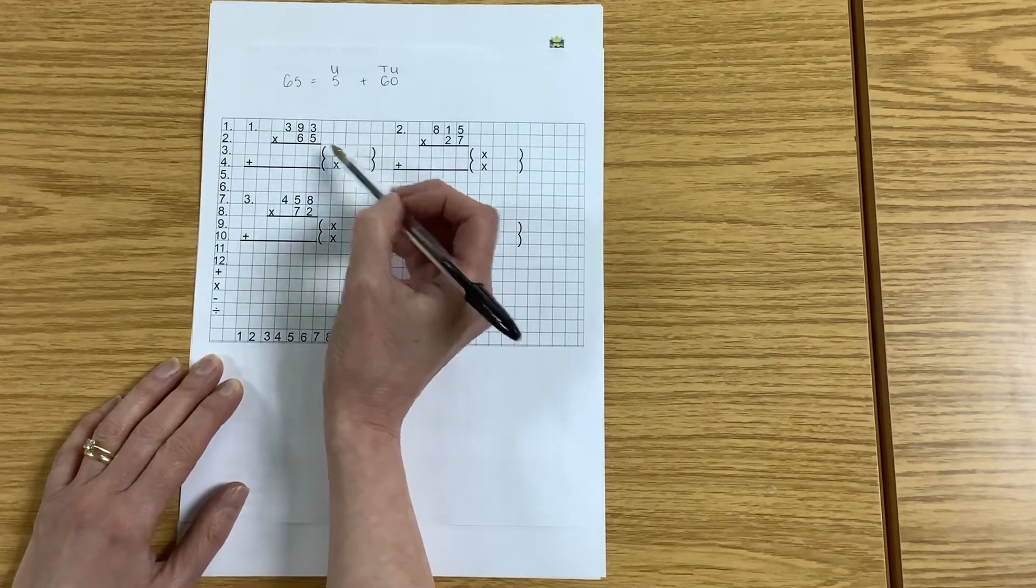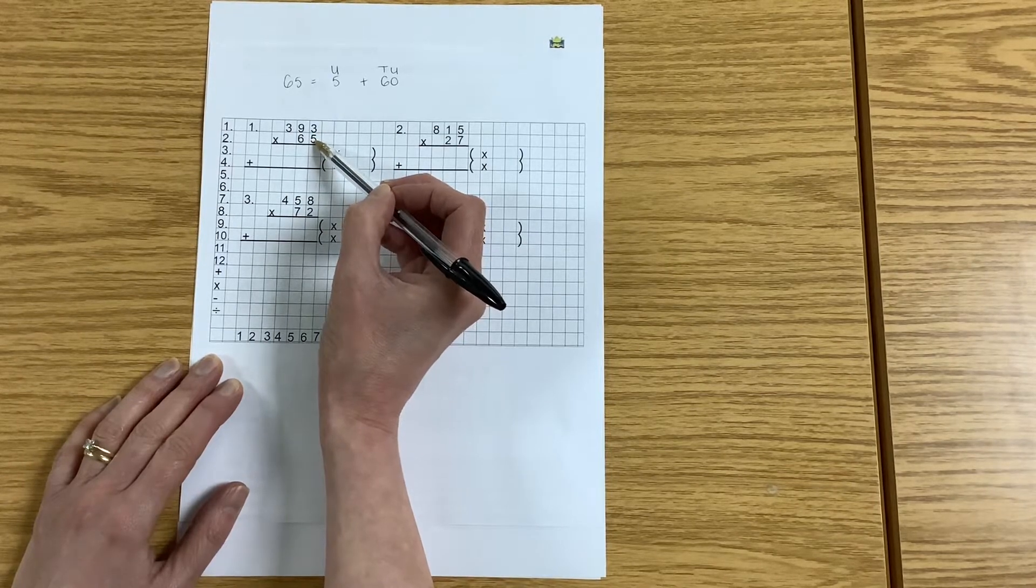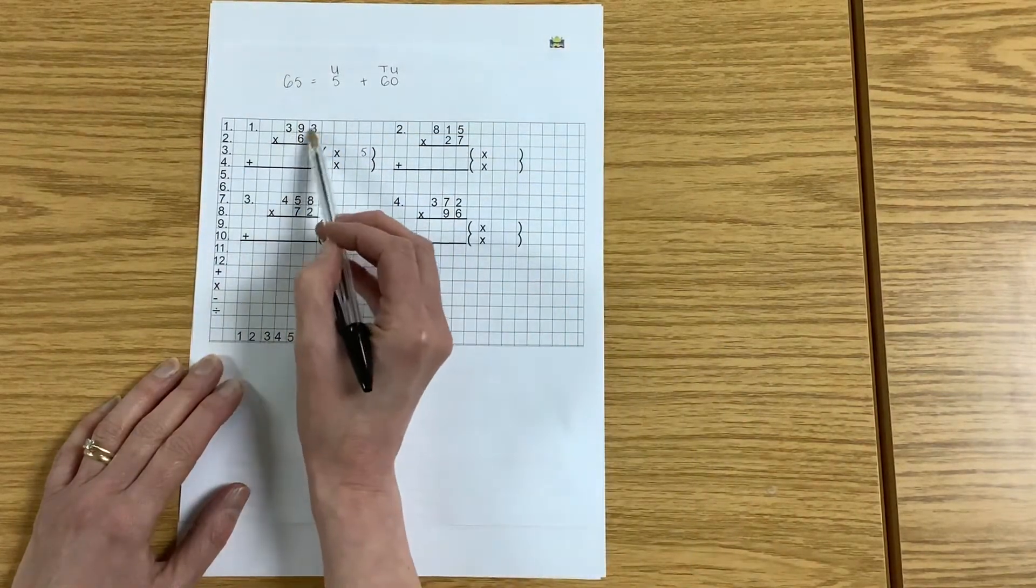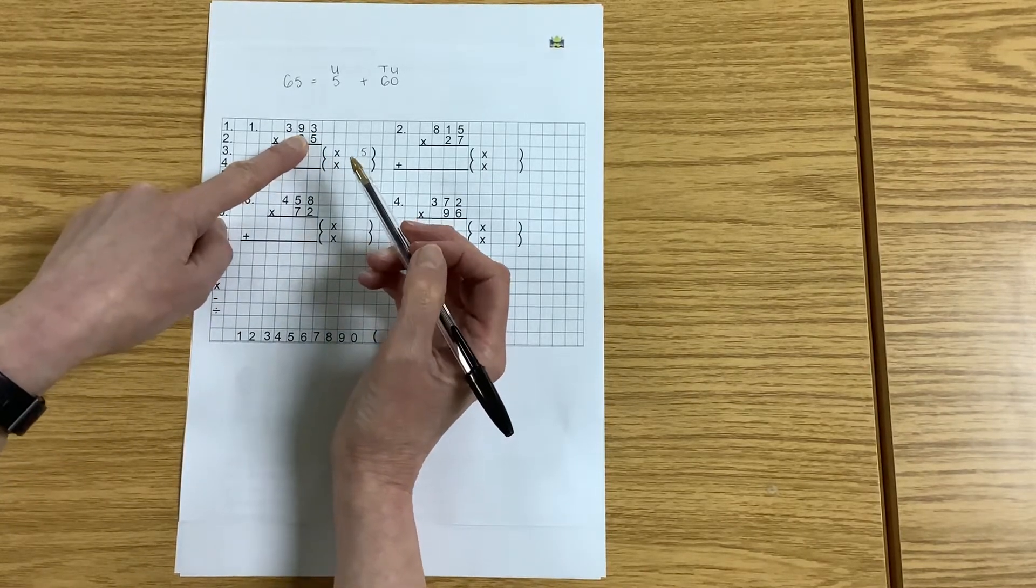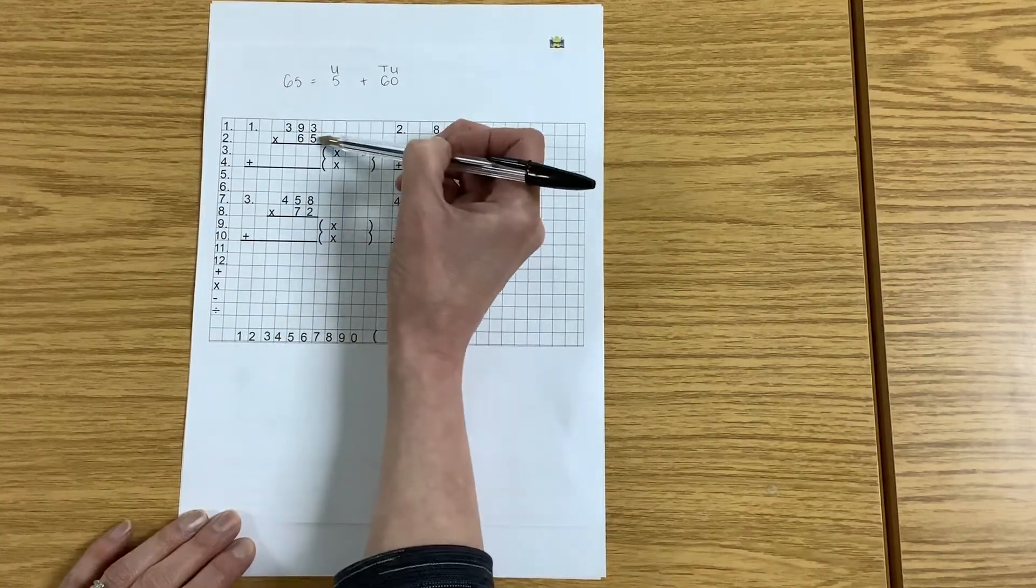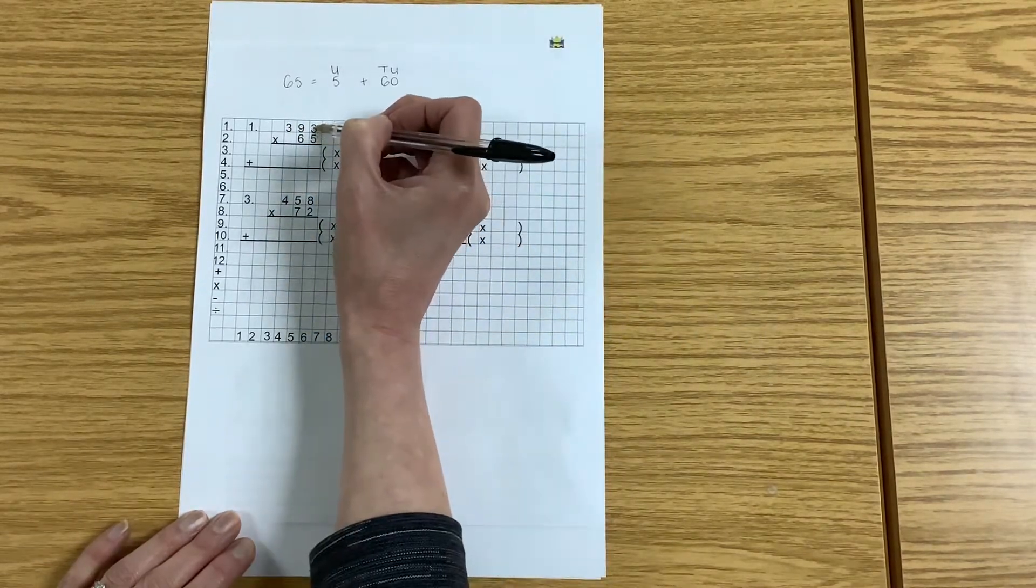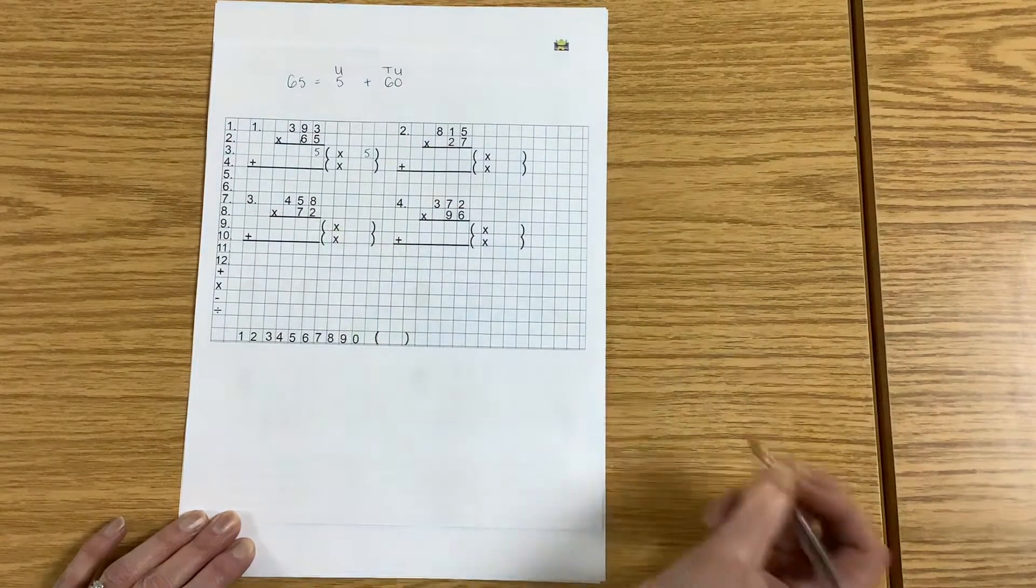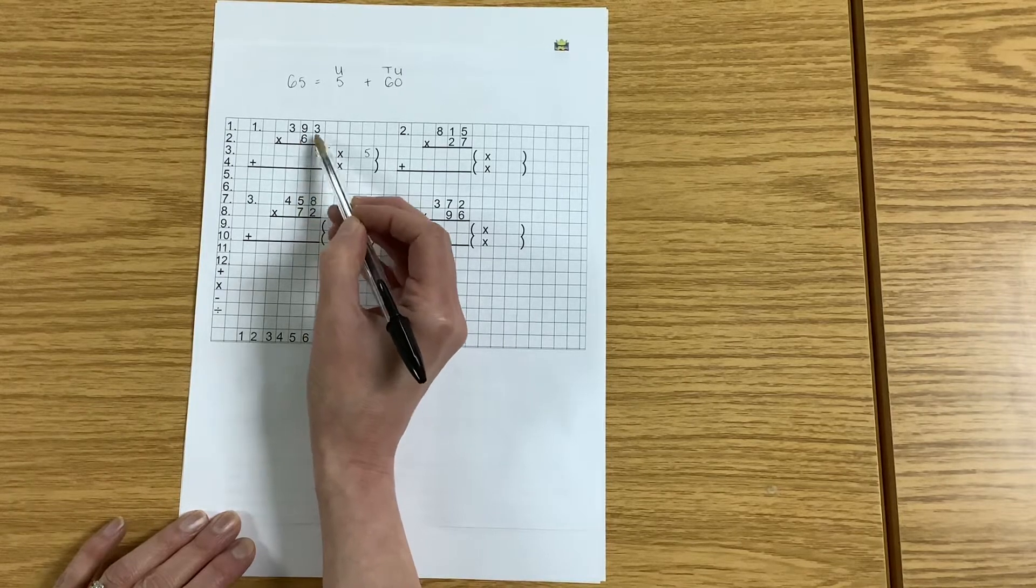In a long multiplication sum, we take the top number and begin by multiplying it by the number in the units. The units number is 5, so I'm going to do 393 times 5. For now, I'm ignoring that 6 in the tens column. So 5 times 3 is 15. I put down the 5 and carry the little 1 over at the bottom, just above the line beside the 6.